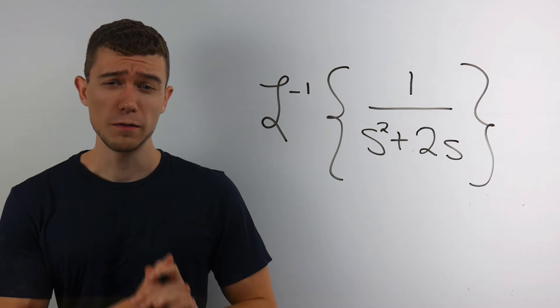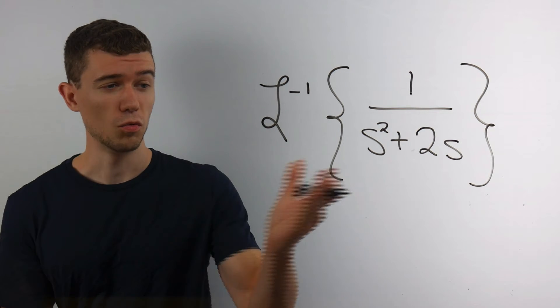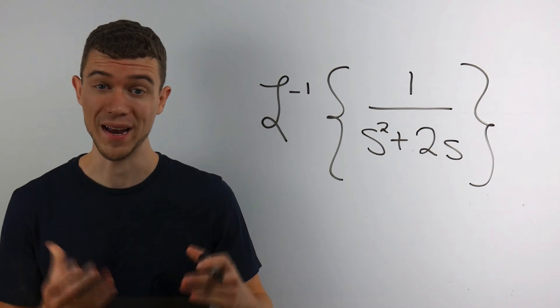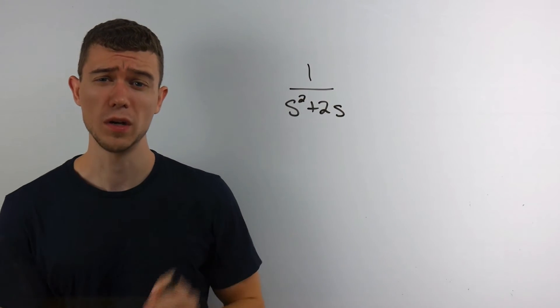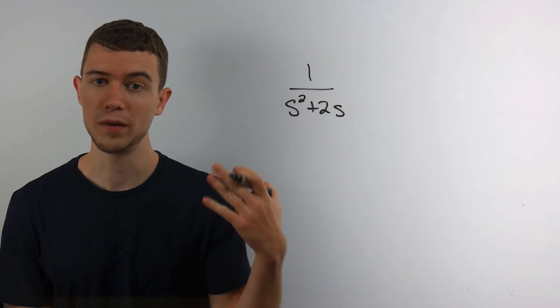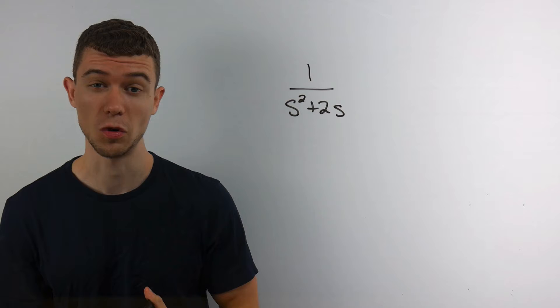Let's see if we can find the inverse Laplace transform right here, this 1 over s squared plus 2s. Now our main mode of attack is usually to factor the denominator, or if it can't be factored, completing the square.